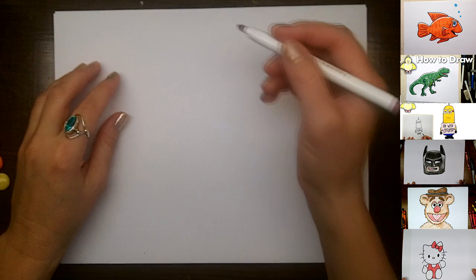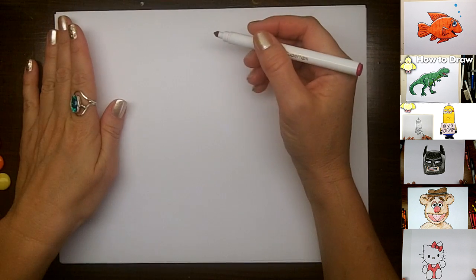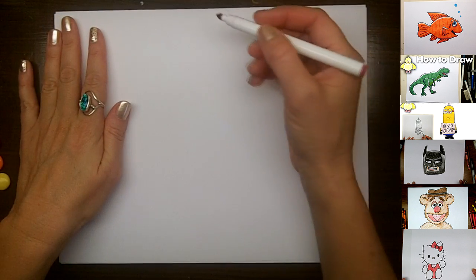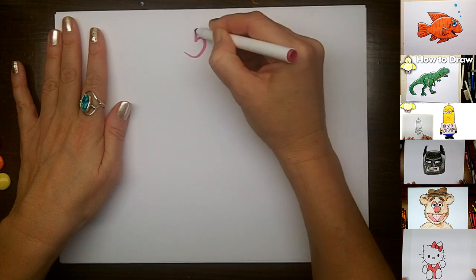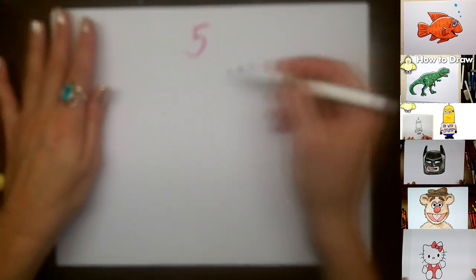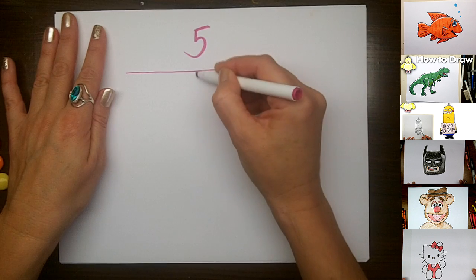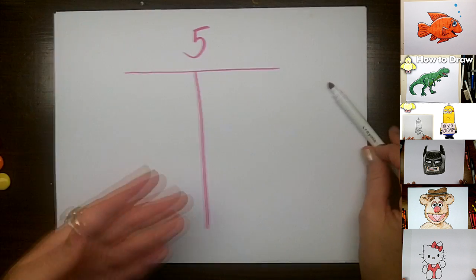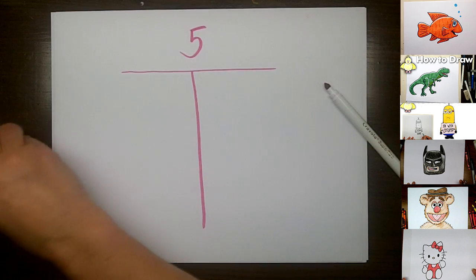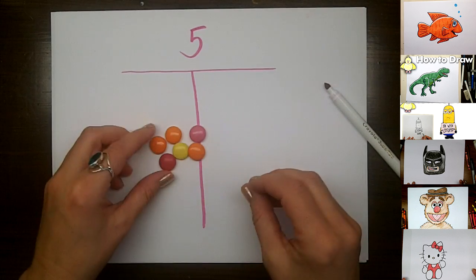So this is a very simple number sense activity that you can do with preschoolers or primary age students learning to add. Basically, all you need to do is think about the number that you are trying to make. I always called this making five.